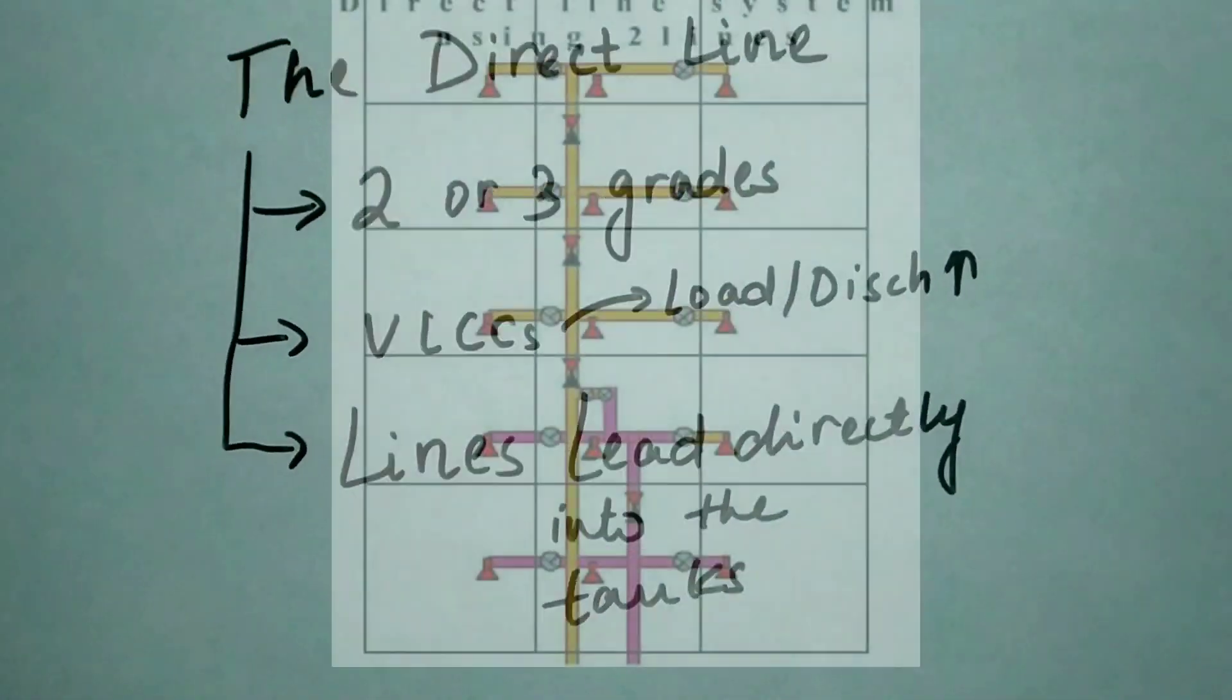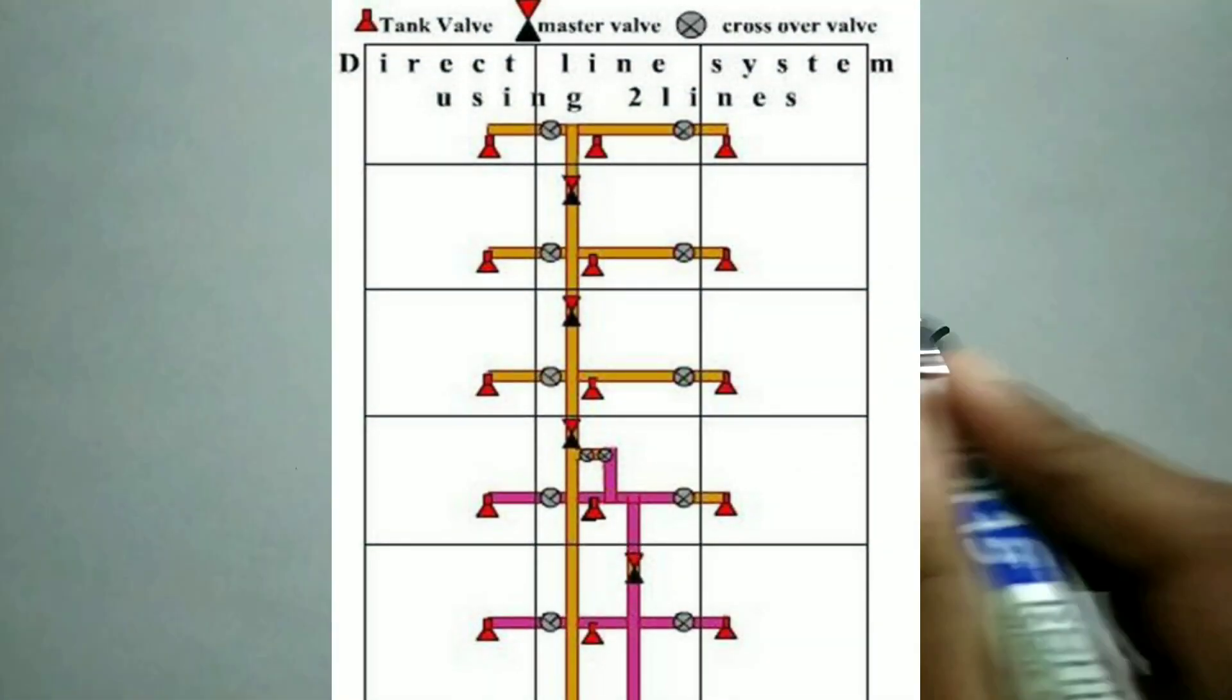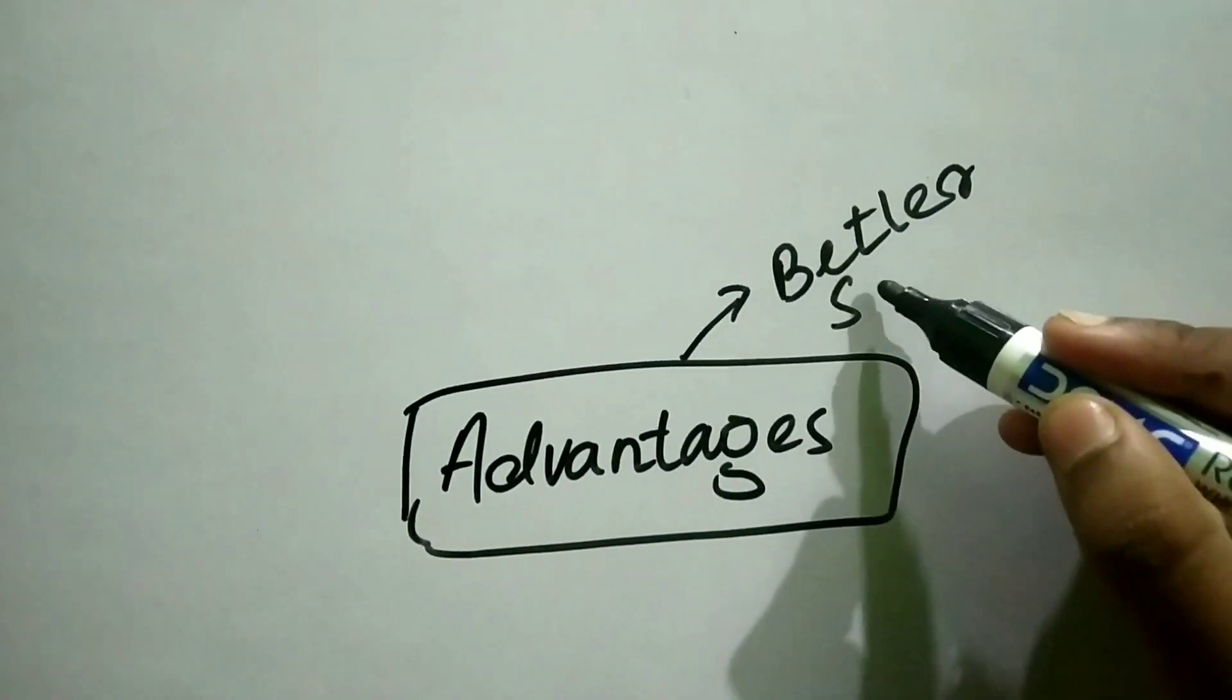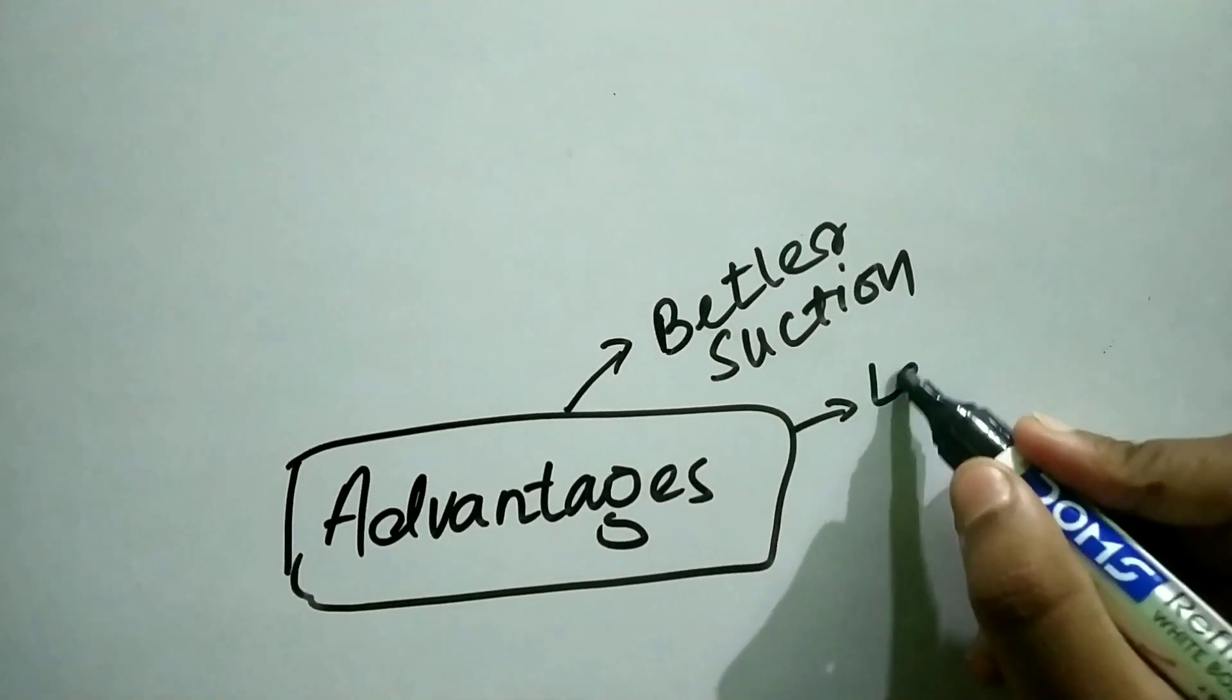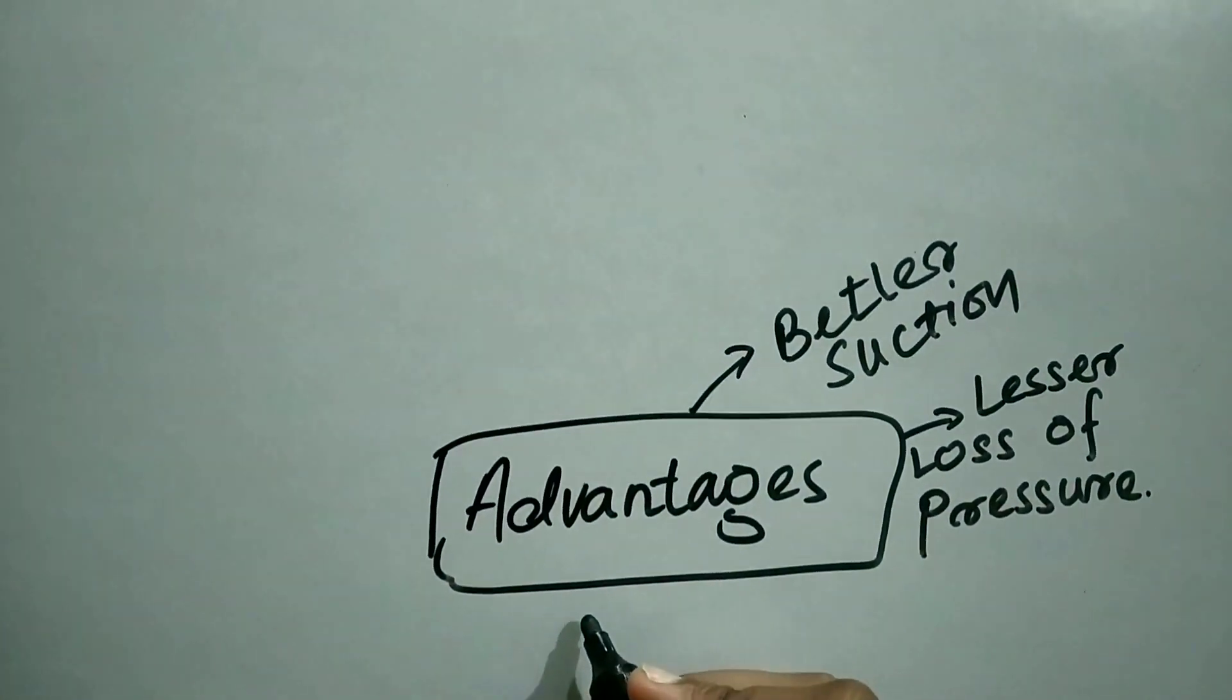Now let us see the advantages of this type of system. It has better suction, lesser loss of pressure, fewer bends and walls which leads to less maintenance, and the time spent for line flushing is also less.